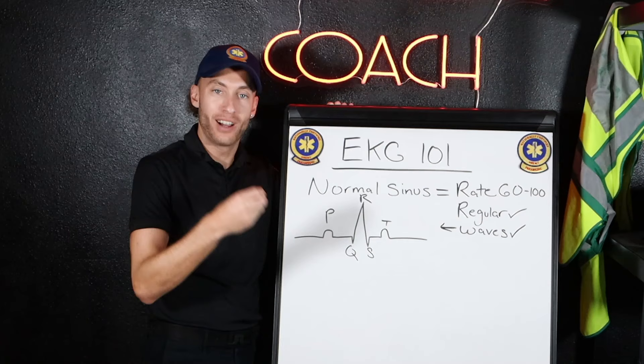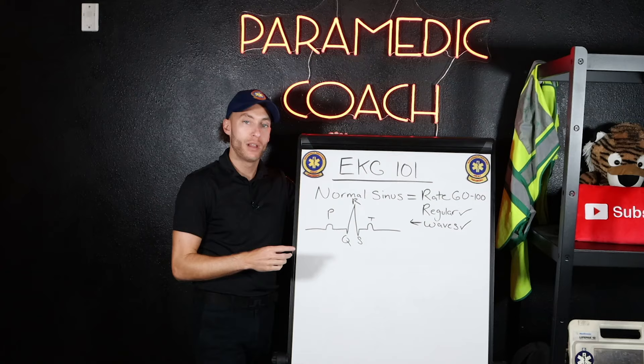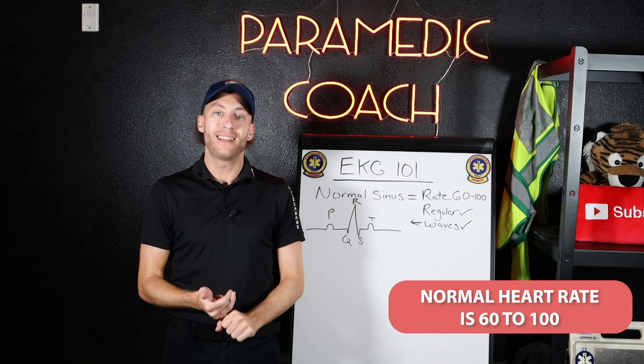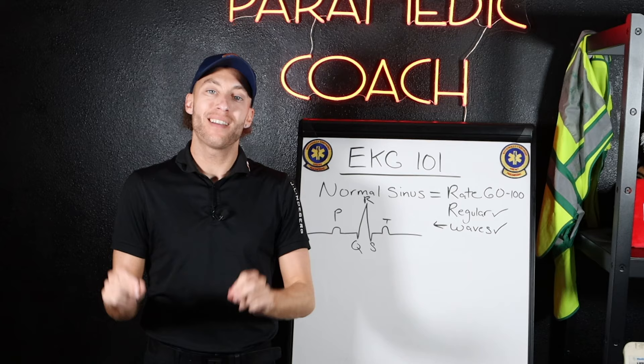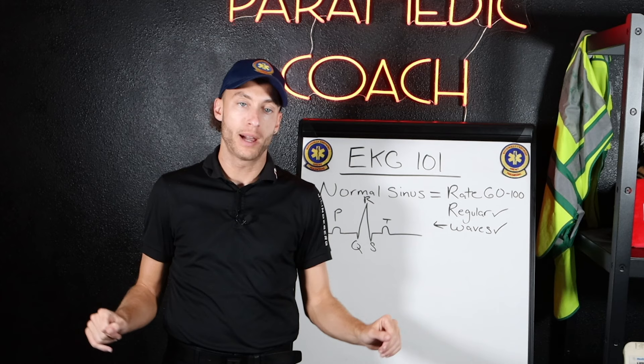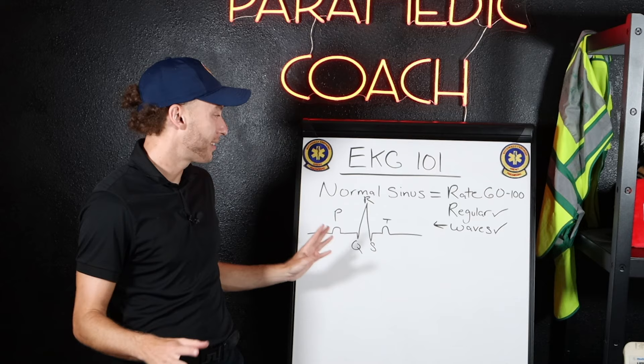In this video, we're going to be going over normal sinus rhythm so you understand this. If we don't understand normal sinus, nothing else makes sense. A normal sinus rhythm on an EKG has a normal rate — the normal heart rate in an average patient is 60 to 100. The rhythm itself needs to be regular, meaning the QRS complexes are going to line up in a regular pattern. The waves need to be appropriate in timing and all present. If we have all that, we have a normal sinus rhythm.